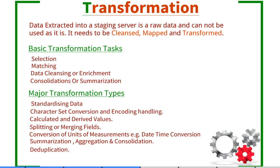Summarization and aggregation of data, as well as deduplication, are also done as part of the transformation phase, where we delete duplicate data received from multiple sources. Finally, we perform key restructuring, which is important because we do not use the same keys from the operational system in the data warehouse. Data warehouses use surrogate keys — non-meaningful keys that are generated irrespective of the primary keys defined in the source systems. We design our data warehouse to populate these surrogate keys using the data from the source systems.